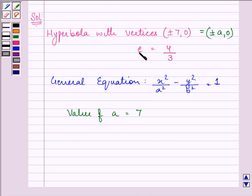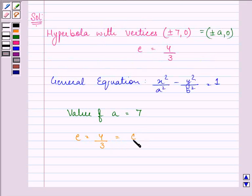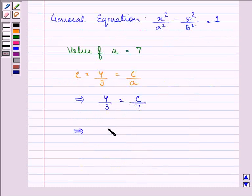And eccentricity is given to us as 4 by 3, which is equal to c by a. Now we know the value of a as 7, so we can find out the value of c, and it will be 28 by 3.